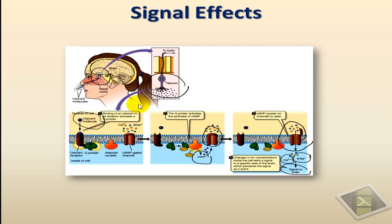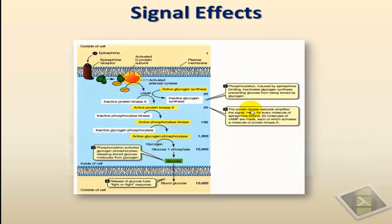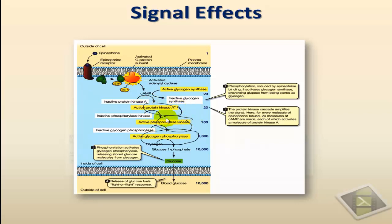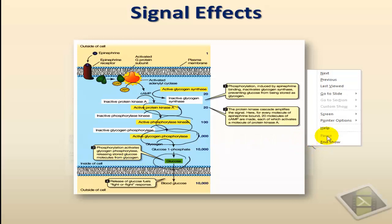That electrical signal will travel from the neuron in the roof of the nasal cavity to the part of the brain involved in interpreting olfactory signals. The other type of cellular response involves changes in the activities of enzymes, and we gave the example of the activation of glycogen phosphorylase under the effect of the activation of adrenergic receptors — a series of enzymes activated resulting in the release of glucose into the bloodstream.